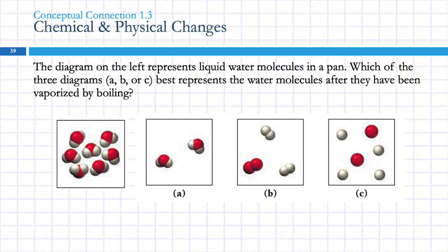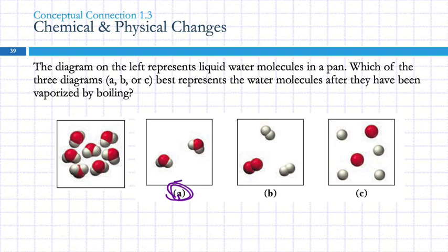The diagram on the left represents liquid water molecules in a pan. Which of the diagrams — A, B, or C — represents water molecules after they've been vaporized by boiling? Boiling water is a physical change, so the particles don't change. The answer is A, because those little water molecules are the same. Going from the original to B or C would be a chemical change, because the individual particles have changed.